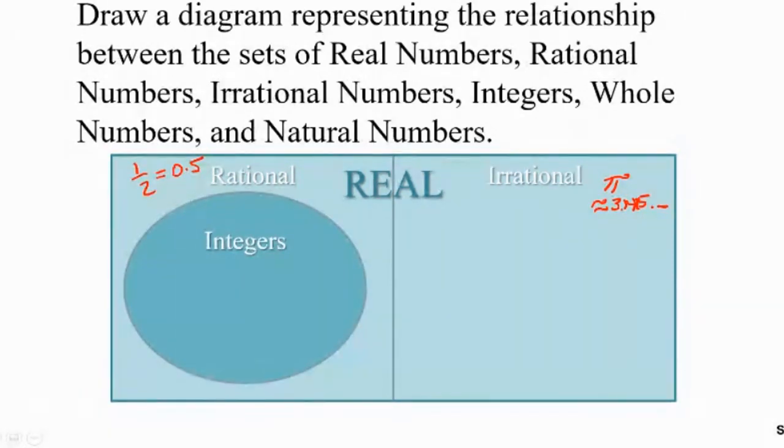For example, one subset that's contained in the rational numbers is the integers, right? Because like the number 3 can be thought of as 3 over 1, and that is a rational number, and it's an integer. The integers have within them the whole numbers, which you recall the whole numbers are like {0, 1, 2, 3, 4}. And within the whole numbers, we have the natural numbers, which is basically all the whole numbers except 0 in there. Okay, so this is the relationship. It's one set inside of the other.